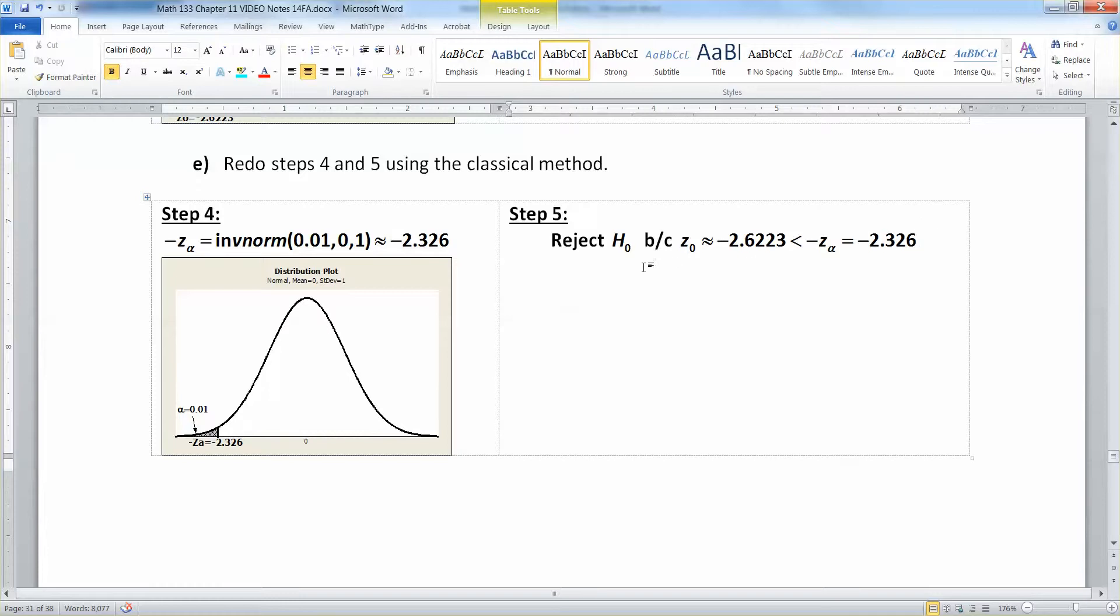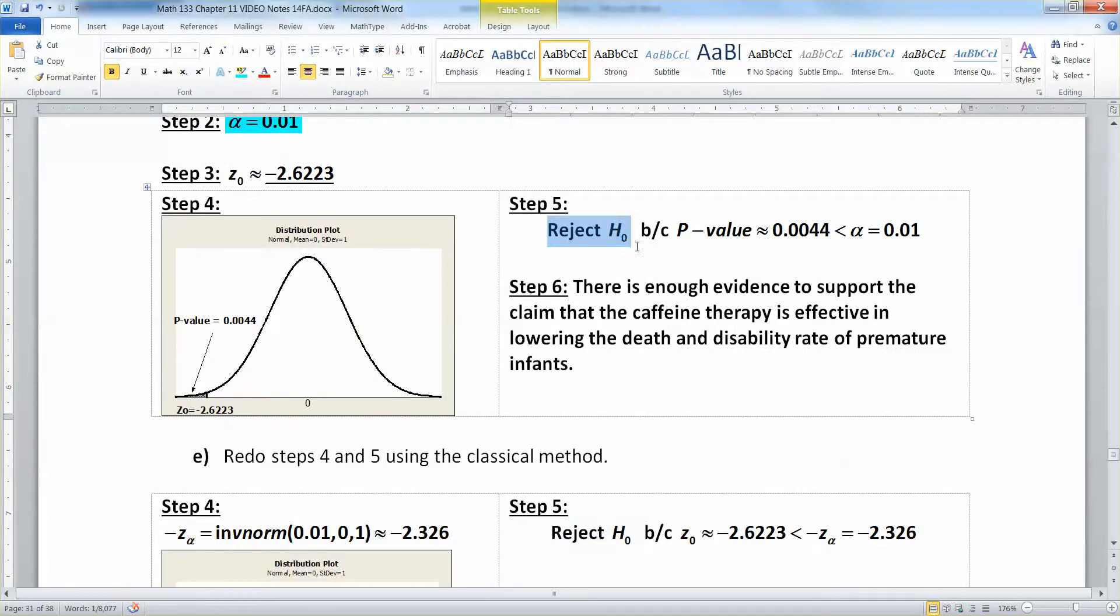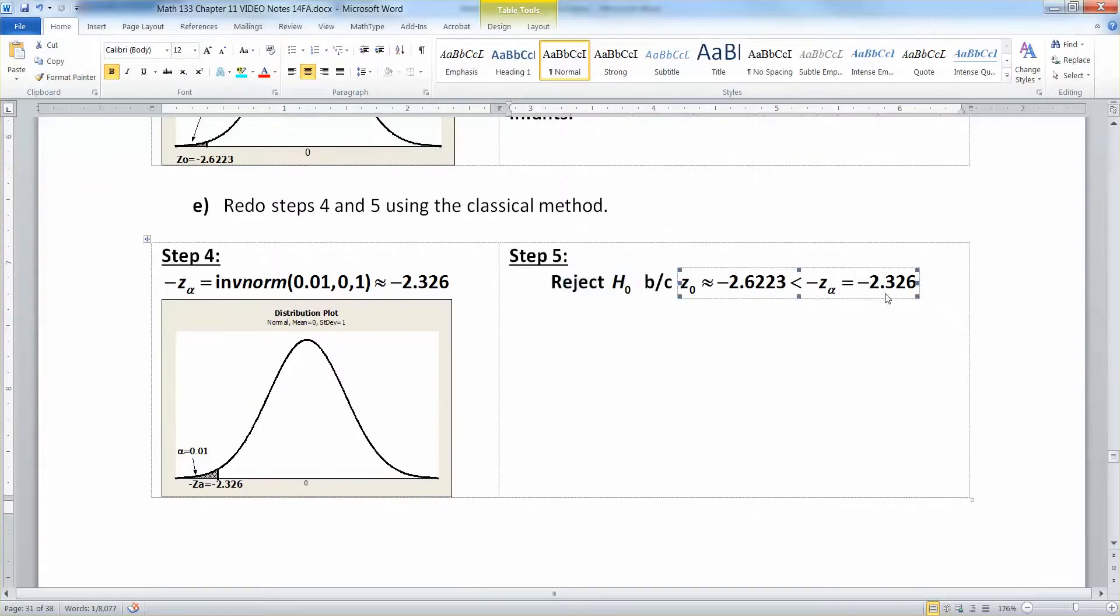And one last reminder, if you reject here, then you must reject here. So usually the p-value method is a little bit easier for folks. So if you do the p-value method and you see you should reject, then make sure you write something to the effect that you should reject here. And of course, as always, write all your information, all your steps, draw your pictures, label everything perfectly, including with Zs and alphas and stuff.